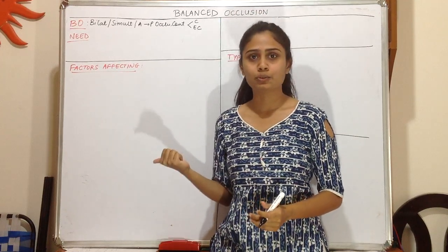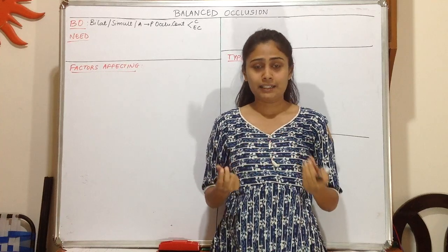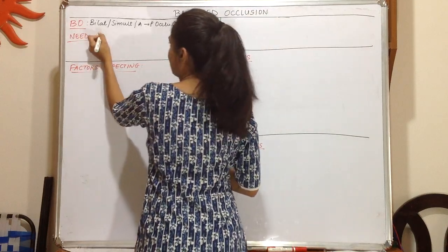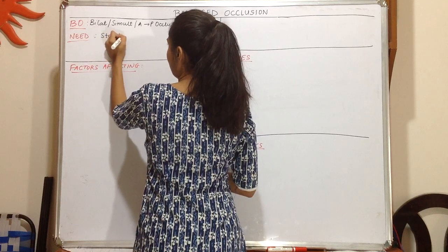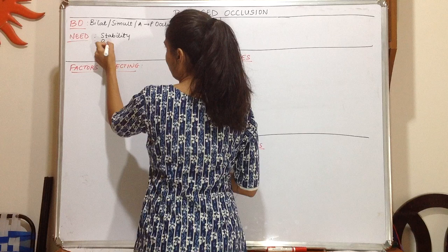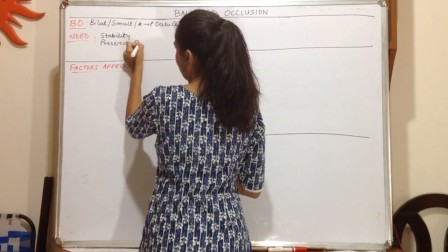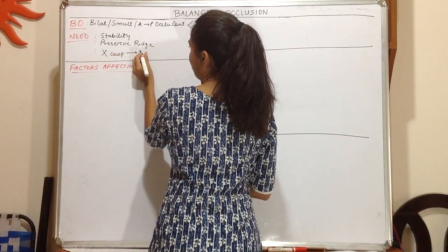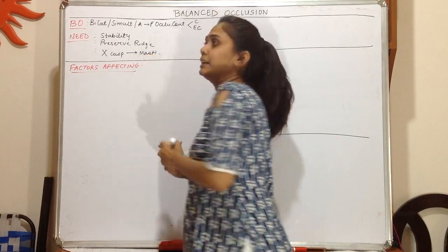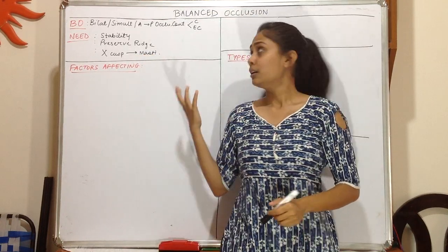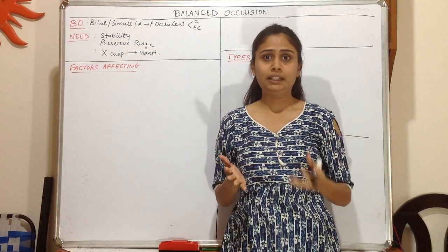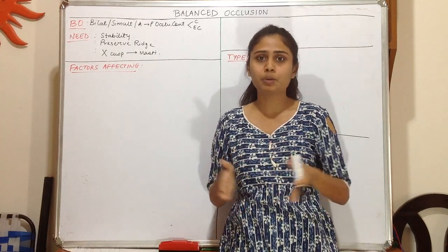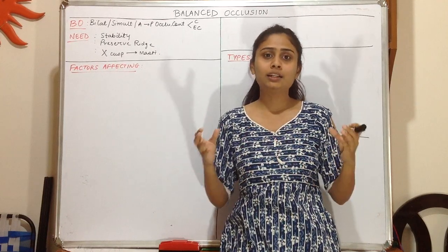So why do we need to study balanced occlusion? We need to place the teeth in such an area that they are in balance, so it doesn't compromise the stability of the teeth or the denture. It also preserves the ridges, and lastly there is no cuspal interference during mastication. So when teeth are placed in balanced occlusion, these three benefits are obtained: increased stability and retention, preservation of ridges by proper distribution of occlusal loads, and no cuspal interference.